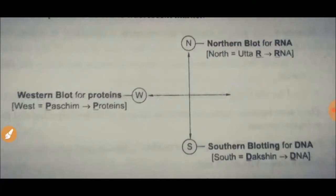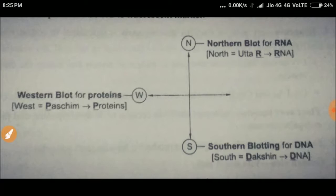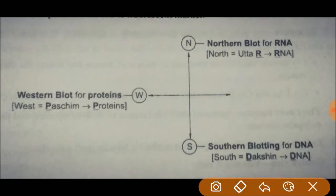Hello everyone, welcome to my channel Nate Knows. Today in this video I will explain a simple method with the help of which you can easily remember all the blotting techniques and which element is used in each technique. Basically there are three elements or substances that are used in blotting techniques, and they are DNA, RNA, or protein.